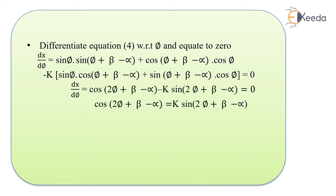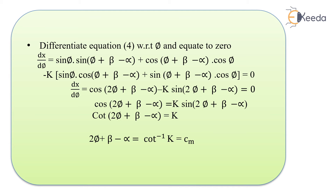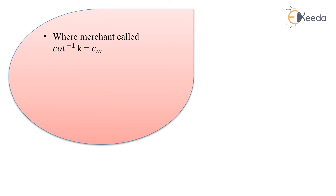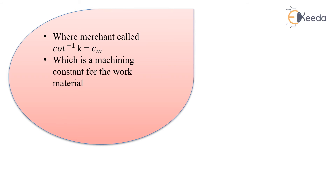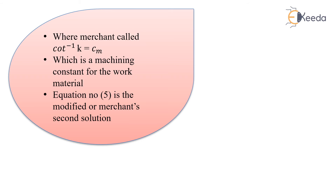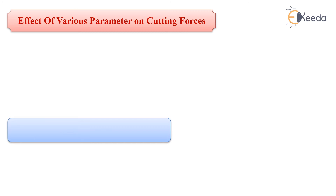Rearranging, we get cot of (2phi plus beta minus alpha) equals k, or 2phi plus beta minus alpha equals cot inverse of k, which is the machining constant denoted Cm. This is the modified Merchant theory — the second solution — where the machining constant depends upon the work material properties of the workpiece.